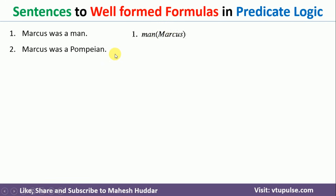Coming back to the second one: 'Marcus was Pompeian.' Again the same thing — Pompeian is one class, and within that, Marcus is one entity. So that's the reason you can write something like Pompeian(Marcus).